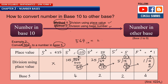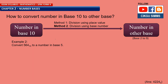So 564 base 10 equals 4224 base 5 — don't forget to write the base 5. That is the first method. Now let's see the second method using the same question: convert 564 base 10. The second method is division using the base number.